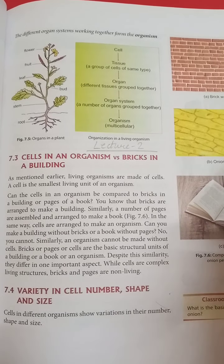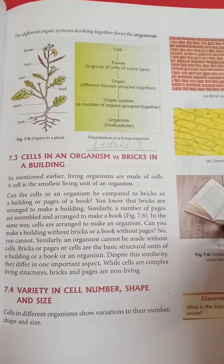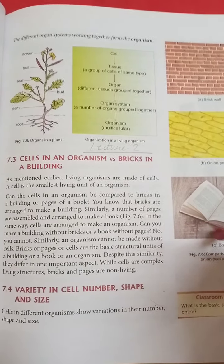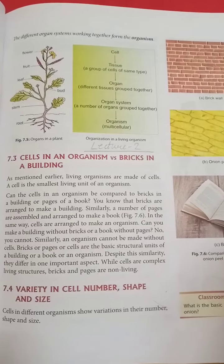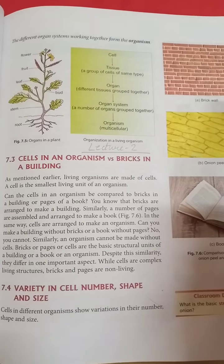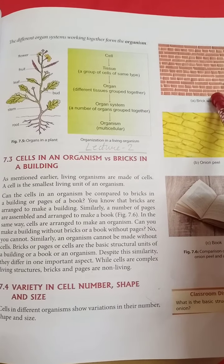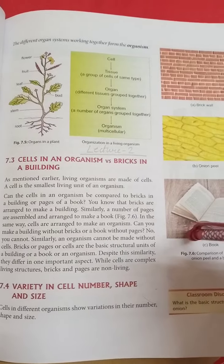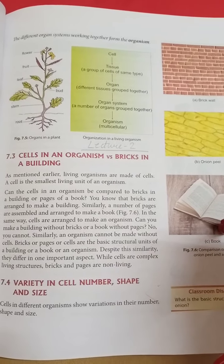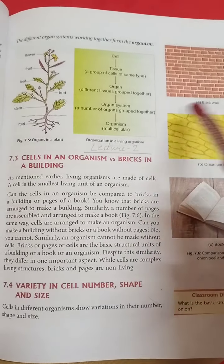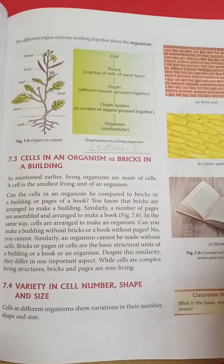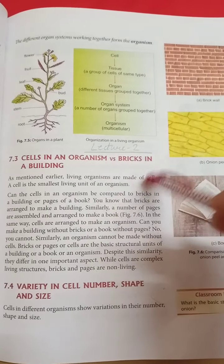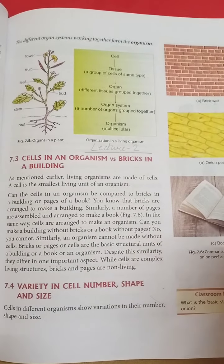Cells are arranged to make an organism. Cell is the basic structural unit of our body, of any living organism. In a building, the brick is the basic structural unit. So these are the comparisons — cells in an organism are like bricks in a building.